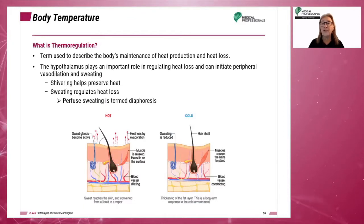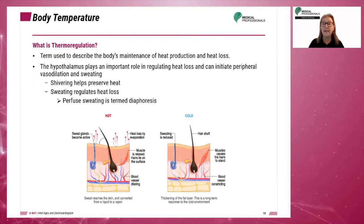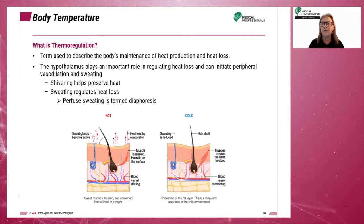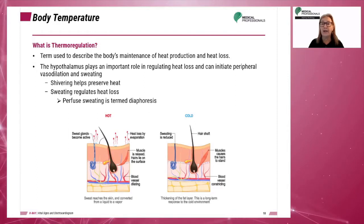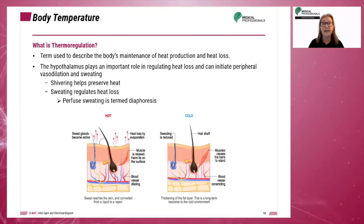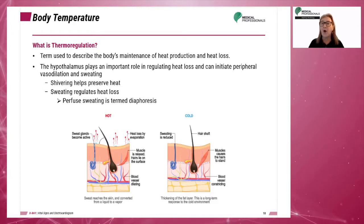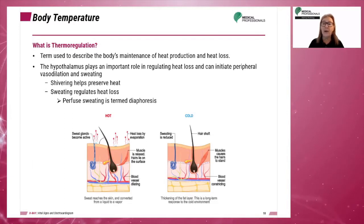Thermal regulation is the term used to describe the body's maintenance of heat production and heat loss. The hypothalamus plays an important role in regulating heat loss and can initiate peripheral vasodilation and sweating. It can also preserve heat by initiating shivering to generate heat. The respiratory system also is important in removing excessive heat by way of ventilation.